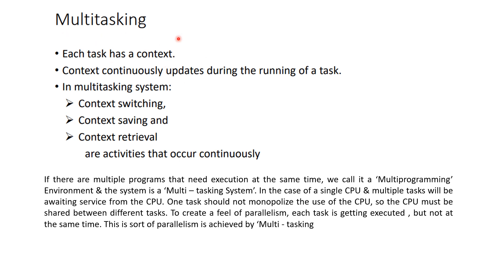All these processes are always taking place in a multitasking environment. Each task has its own context, and the context continuously updates during the running of a task. So in a multitasking system, context switching, context saving, and retrieval continuously occur. In a single CPU with multiple tasks, all tasks await service from the CPU and one task should not monopolize it. CPU is shared between tasks to create a feel of parallelism — each task gets executed but not all at the same time. This sort of parallelism is achieved by multitasking.